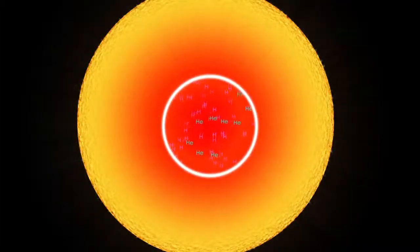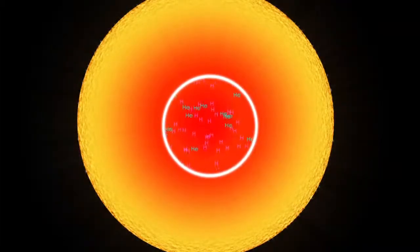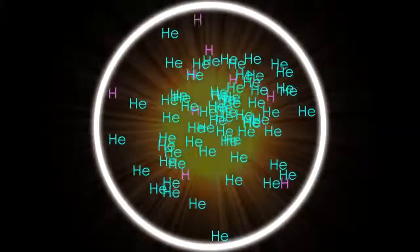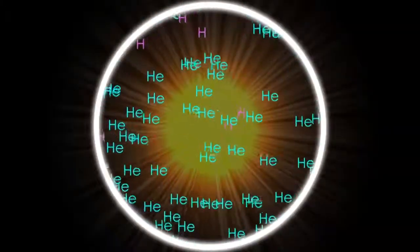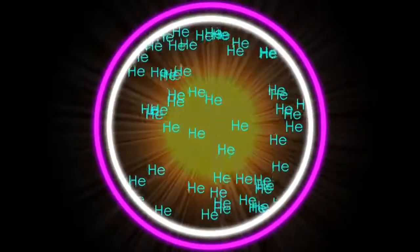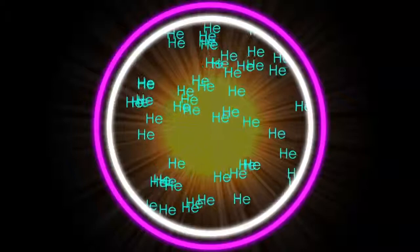Eventually, the hydrogen in the center of the star runs low, and we've mostly got a lot of helium jostling together instead. When hydrogen fusion stops, the star is no longer in equilibrium, and the core shrinks down. But this makes things even hotter, so the star can start to fuse helium into carbon.